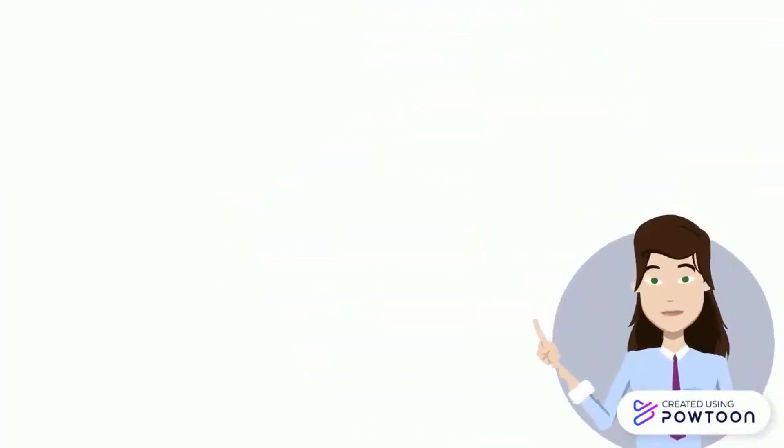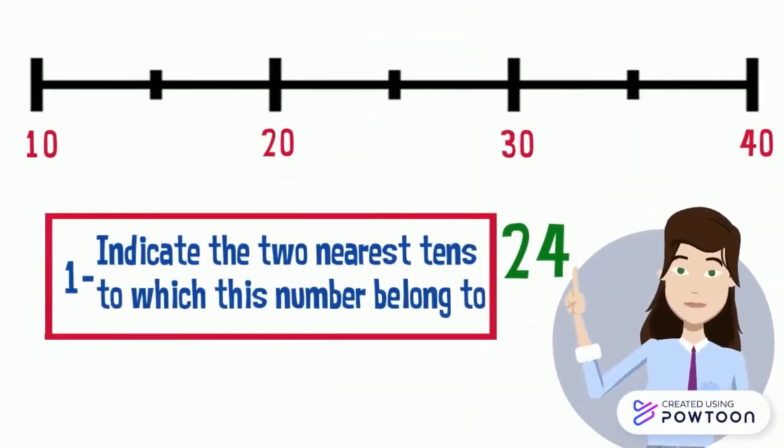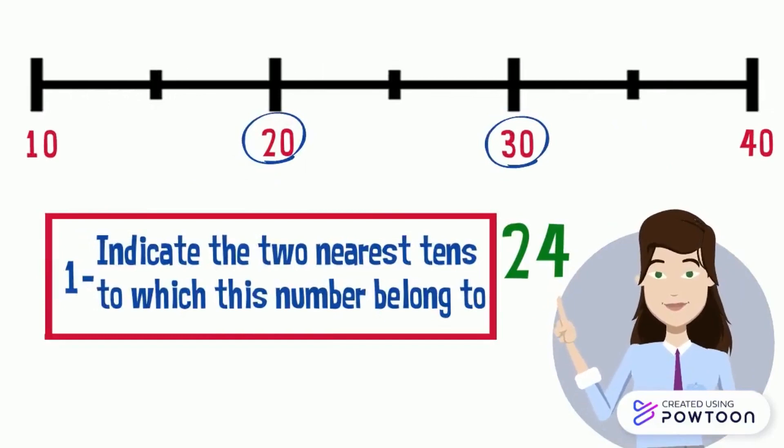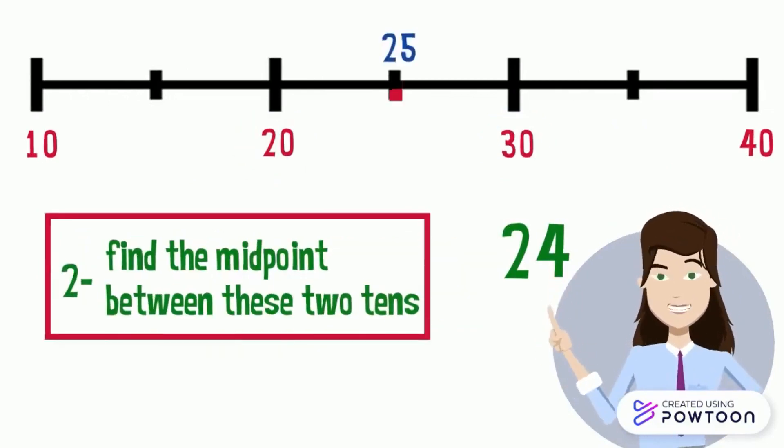So we can conclude that the number 24 belongs to the two nearest tens which are 20 and 30. The midpoint between 20 and 30 is 25 because it is the number that is exactly in the middle between these two tens.